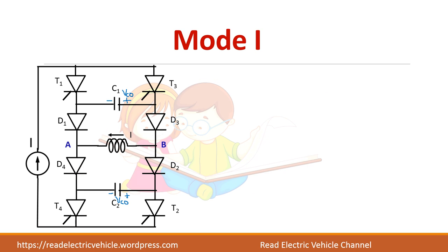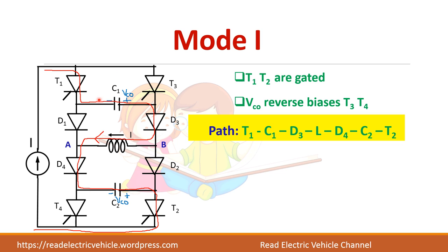Let us consider mode one in which T1 and T2 are given a gate pulse. Already T3 and T4 are conducting; now we are giving gate pulse for T1 and T2. Once the gate pulse is given for T1 and T2, the capacitor voltage reverse biases T3 and T4, so T3 and T4 will be turned off. The path of the current will now be T1, C1, D3, L, D4, C2, and T2.